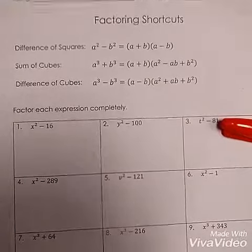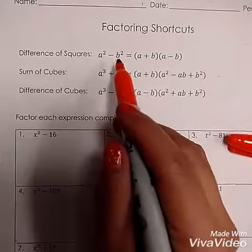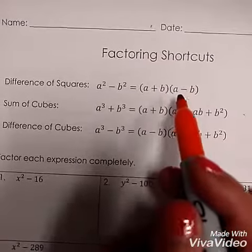This is factoring shortcuts. The first one we have is the difference of squares. a² - b² equals (a + b) times (a - b).